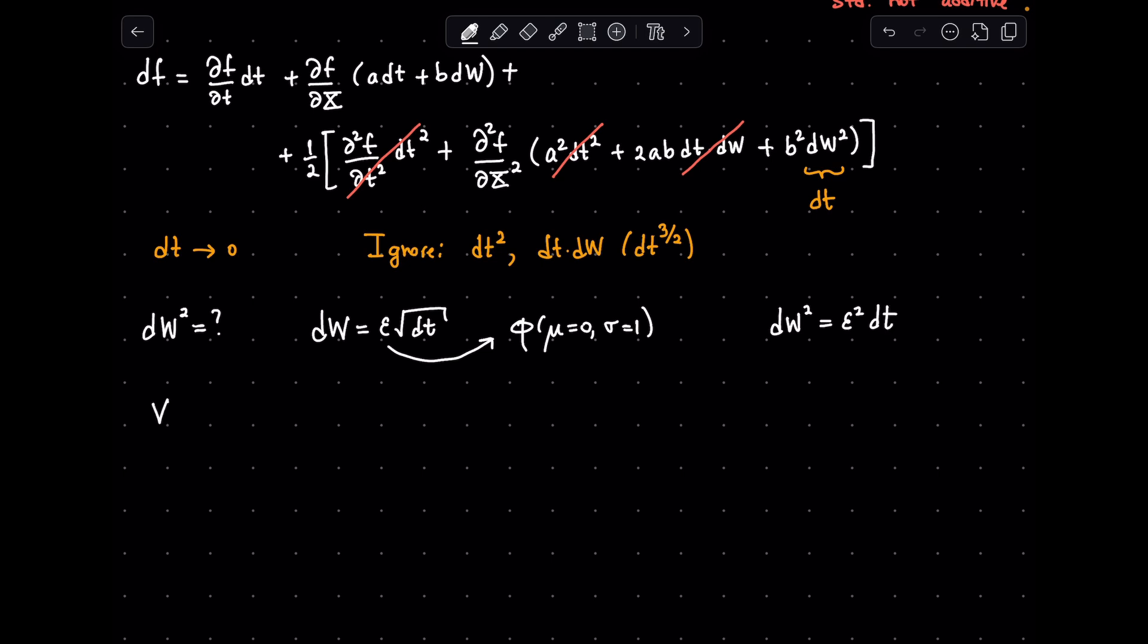First, let's look at the variance of epsilon, which has to be equal to 1 as it is sampled from sigma equals 1 by construction. But we can also write it using the variance formula. Since the expected mean is 0, we get that the expected epsilon squared is equal to 1. This is going to be useful for us soon.